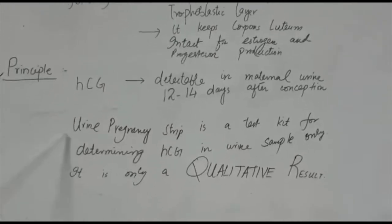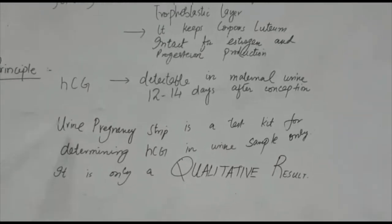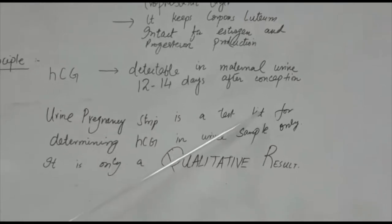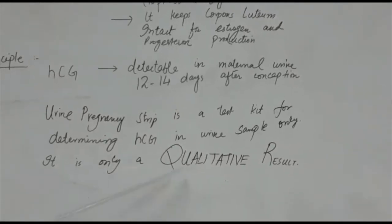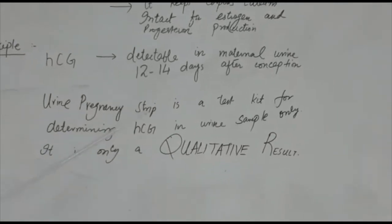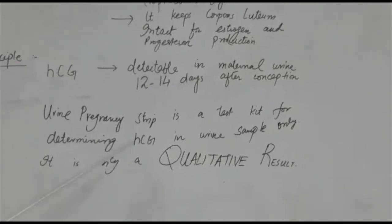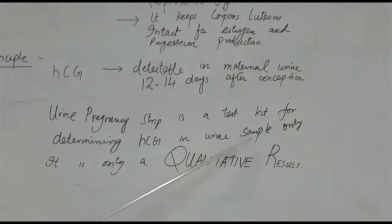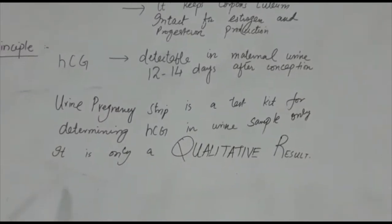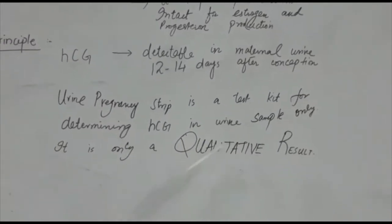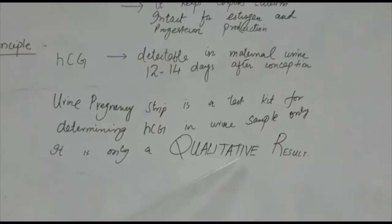This pregnancy test or urine pregnancy strip test is a qualitative test. This strip is a test kit for determining HCG in the urine sample only. It gives us only a qualitative result.